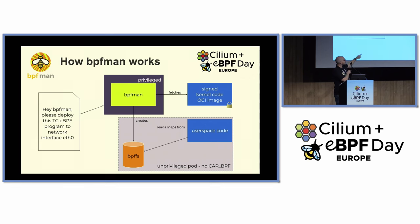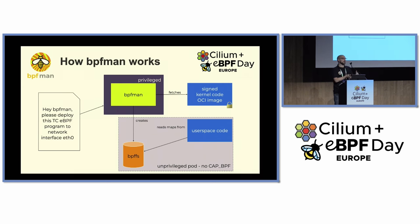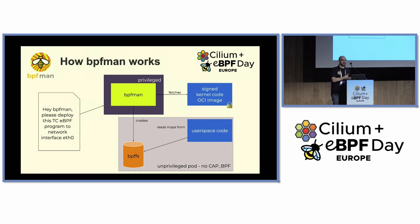To make the user space side unprivileged, we use the BPF filesystem — a virtual filesystem available in Linux. We're able to pin all of your maps onto that, so user space code without any additional privileges is able to read those maps. If you've got a read-only workflow, you can be completely unprivileged inside of Kubernetes, which is something we really wanted to enable.